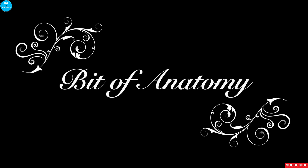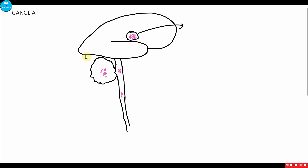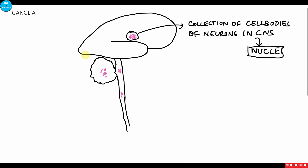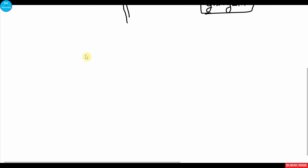Hello everyone, welcome to Bit of Anatomy. In this tutorial we will see the histological features of ganglia. Collection of cell bodies of neurons within the central nervous system is called nuclei, whereas collection of cell bodies of neurons outside the central nervous system, or within the peripheral nervous system, is known as a ganglion. So ganglia is a collection of cell bodies of neurons.